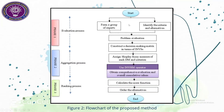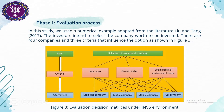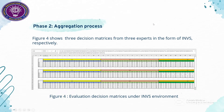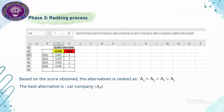This is the flowchart of the proposed method. We have three phases: the evaluation process, the aggregation process, and the ranking process. For the implementation part, this study uses a numerical example taken from the literature by You and Tang. The investors select the company worth investing in. There are four companies and three criteria that influence the options as shown in figure three. This is the aggregation process, which includes the evaluation decision matrix under the interval neutrosophic big set environment, with an example of spreadsheet computations and the ranking process.